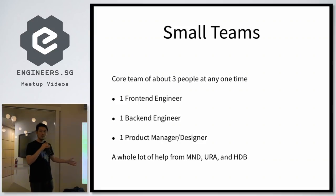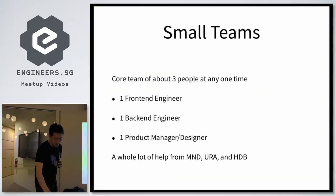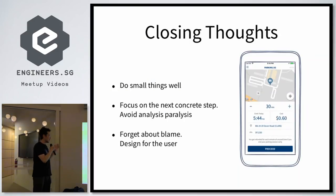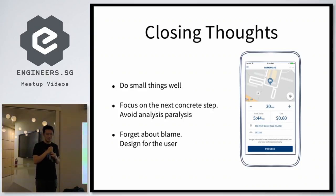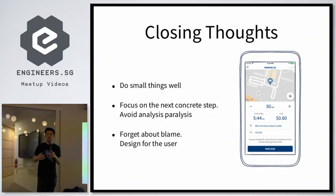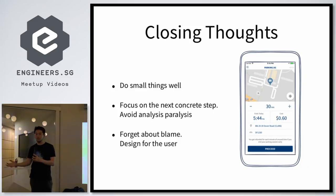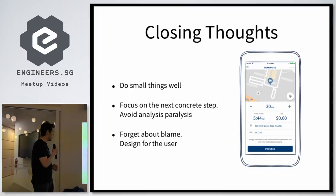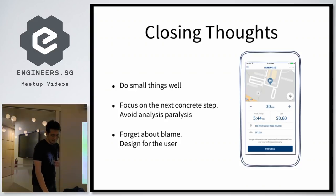Obviously there was also a whole lot of help from the agencies we worked with. So in summary, if you were to take away a few things from this talk: one, do small things well, because it is very rarely the case that doing a lot of things poorly is a better option. Two, focus on the next concrete step — when you're dealing with technology you're almost by definition doing something new, and there's a lot you can't plan for, so it's better to start exploring than to over-plan. And finally three, forget about blame — design for the user. Because in the end, if the user doesn't get what you're doing and they don't benefit, then you haven't really done anything.